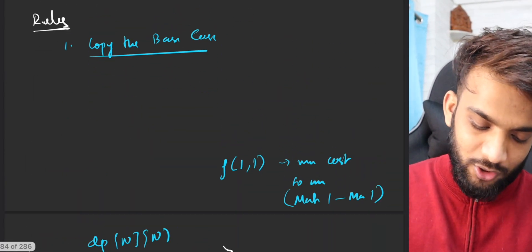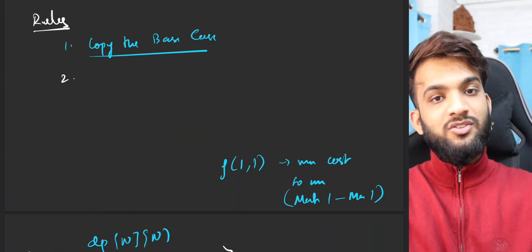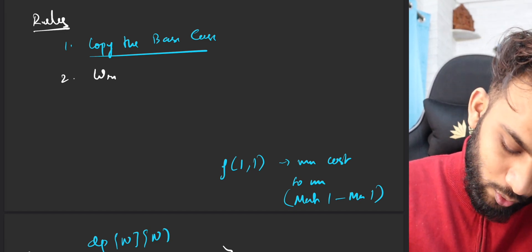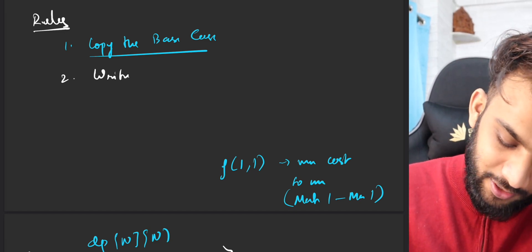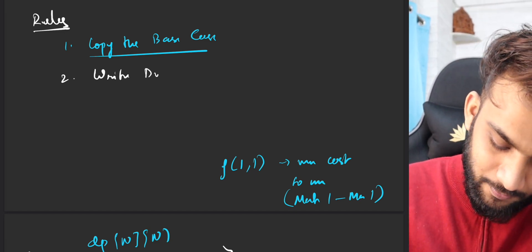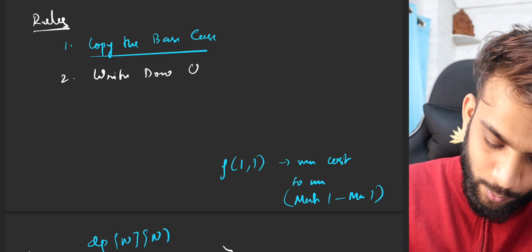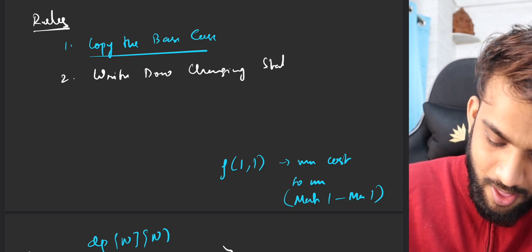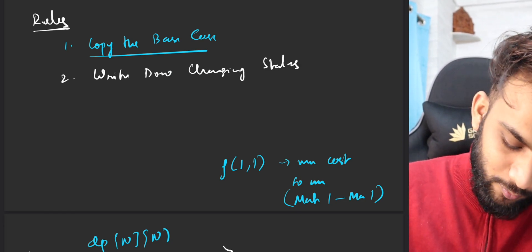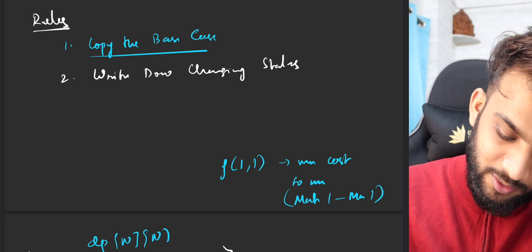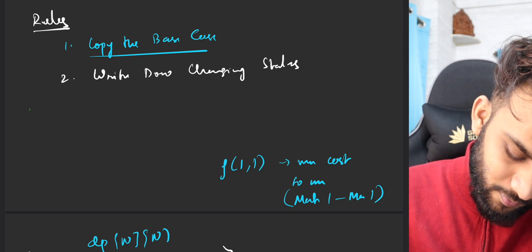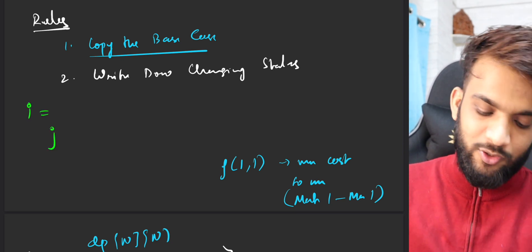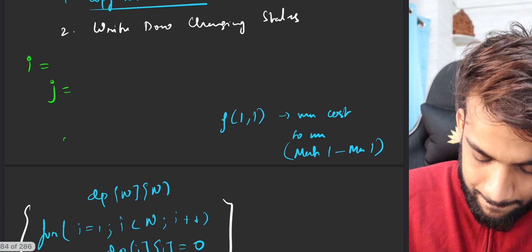Step two: write down the changing parameters, the changing states. What are the changing parameters? One was i, and the other one was j.